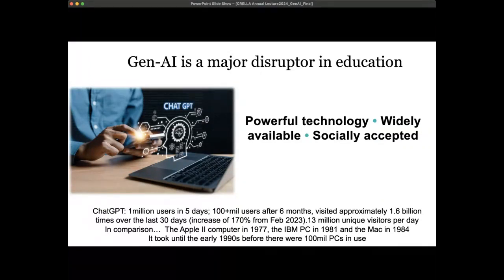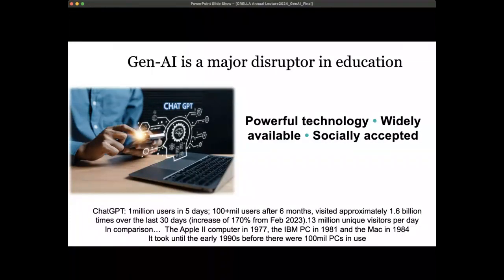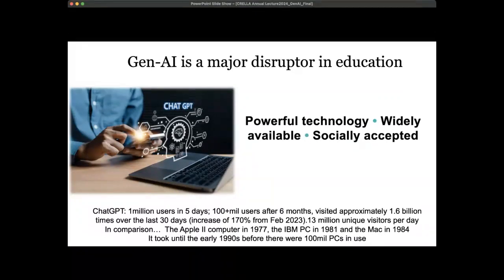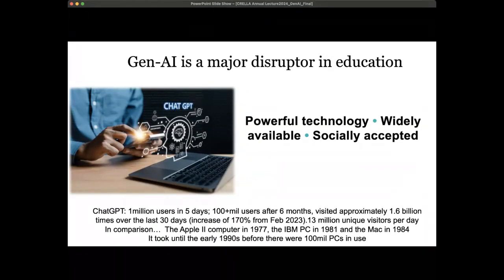ChatGPT had 100 million users after six months, and as of this morning it was visited approximately 1.6 billion times over the last 30 days — an increase of 170 percent from February 2023 — with over 13 million unique visitors per day. As a comparison, when the Apple 2 computer came in 1977, the IBM PC in 1981, and the Mac in 1984, it took until the early 1990s before there were 100 million PCs in use. That gives us a fair idea of the pace and power of this technology.